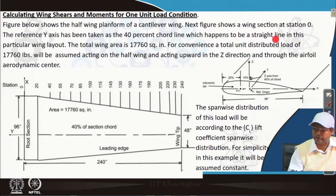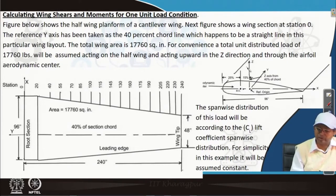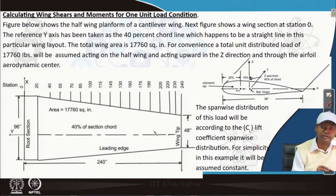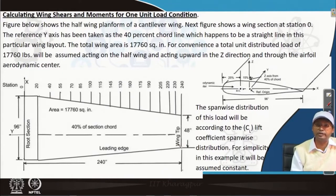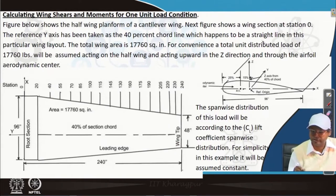Usually the 40 percent chord line is not a straight line because of complicated geometry and various types of aerodynamic airfoils. Airfoils used at different sections in modern aircraft are never the same — the airfoil section changes and the shape also changes. Depending on that, it is generally not a straight line, which is why emphasis is placed on the fact that in this case it is a straight line.